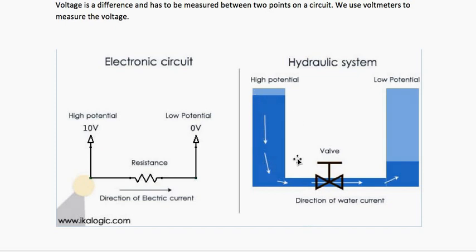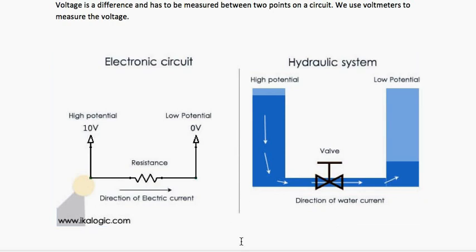A diode will allow the flow of current or voltage from higher to lower, but not the other way. Suppose the water levels reverse — even if the other tank is full, the diode won't allow current to flow in the opposite direction because it is polarized. LEDs are a specific type of diode — they also allow current only from positive to negative, not the other way. But when current flows through an LED, it lights up and emits light. That is why it is called a Light Emitting Diode.